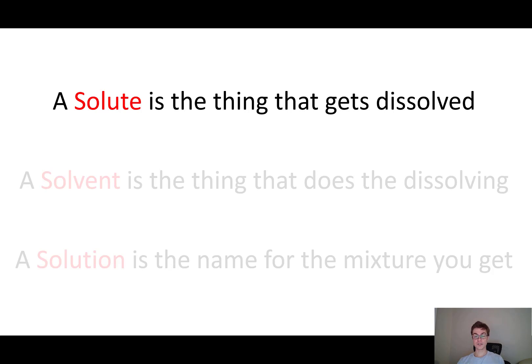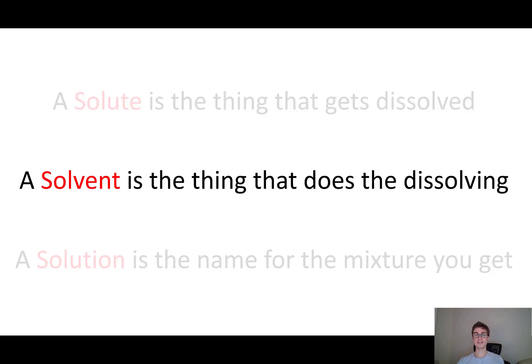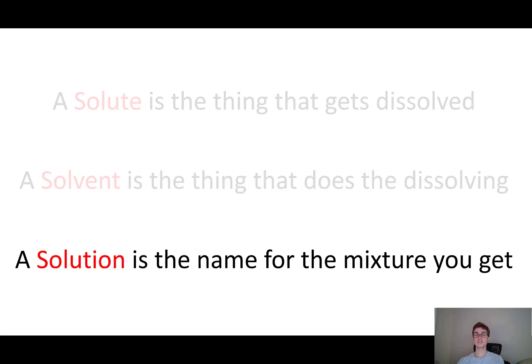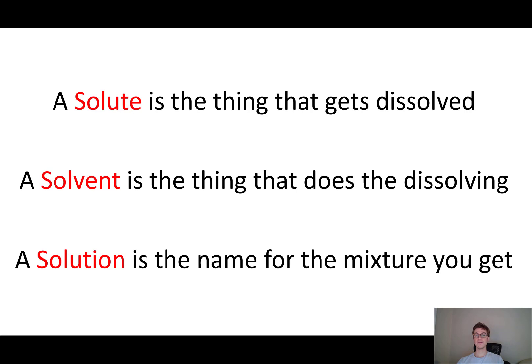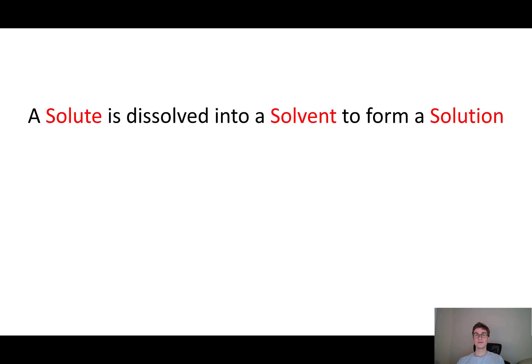A solute is the thing that gets dissolved. A solvent is the thing that does the dissolving. And a solution is the mixture that you get at the end. The relationship between them can be summarized with a sentence: a solute gets dissolved into a solvent and forms a solution.